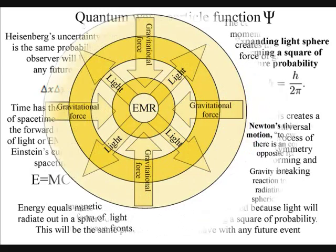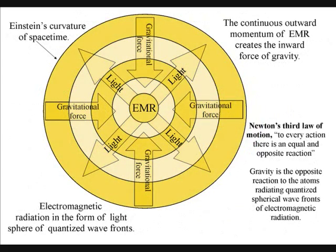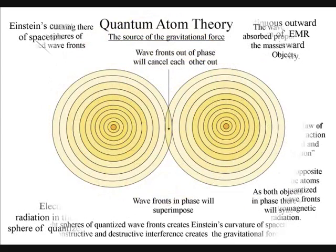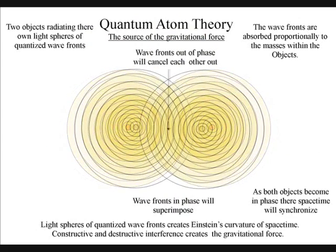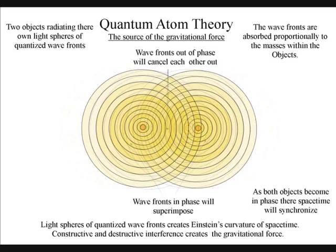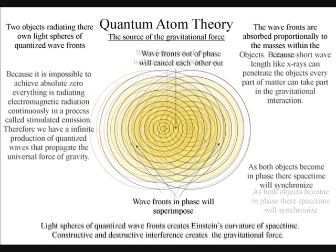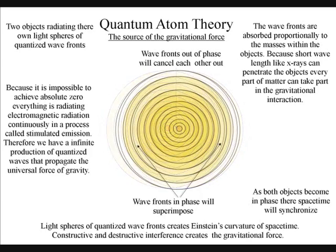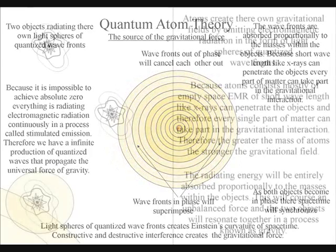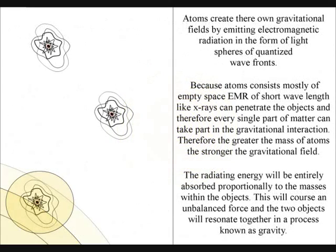This theory unites quantum physics with Einstein's theory of general relativity. The outward momentum of electromagnetic radiation forms the inward force of gravity. Radiating energy will be entirely absorbed, proportionally to the masses within the objects. This will cause an unbalanced force, and any two objects will resonate together.